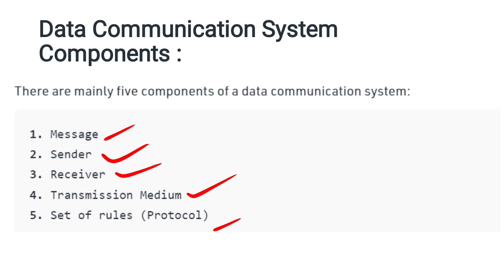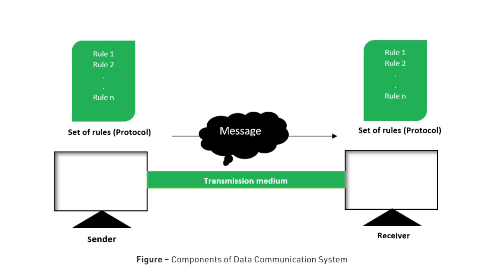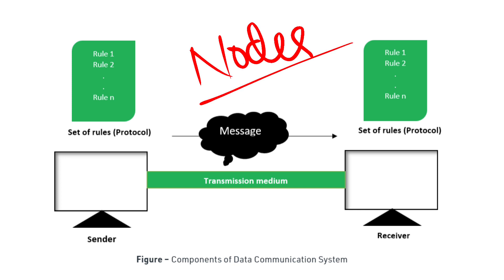Here is a figure showing a sender. Following a protocol, the sender passes a message through the transmission medium to the receiver. The receiver follows the protocol to receive the message. These are the five components of data communication.